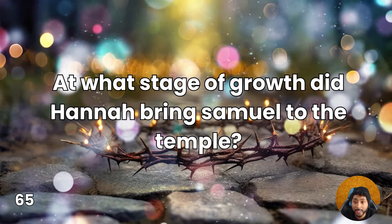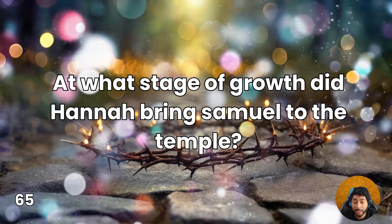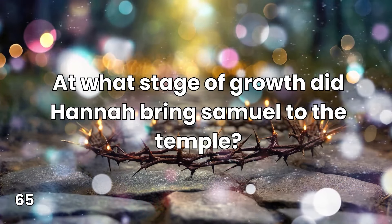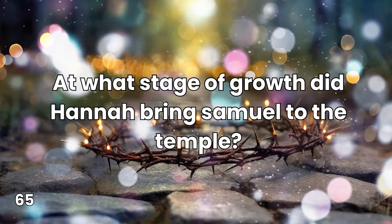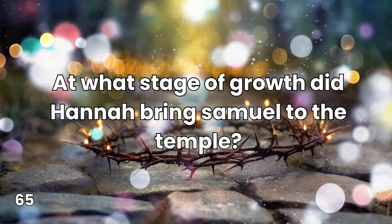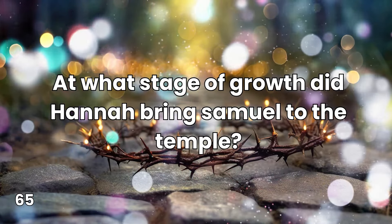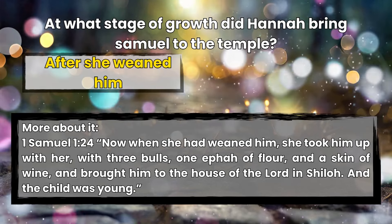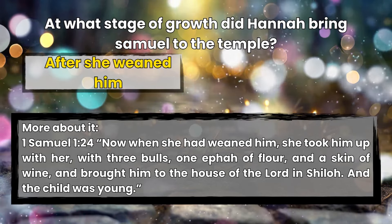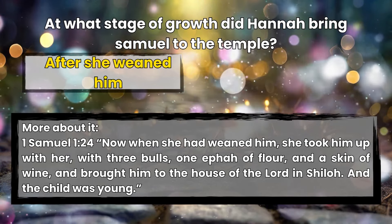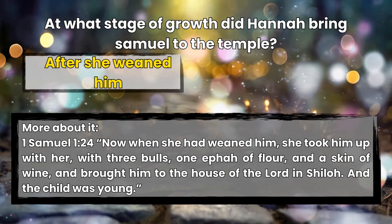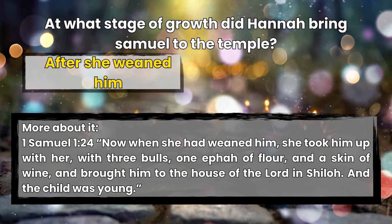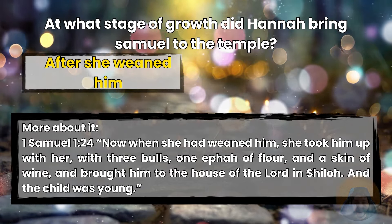Question 65: At what stage of growth did Hannah bring Samuel to the temple? After she weaned him. 1 Samuel 1:24 — Now when she had weaned him, she took him up with her, with three bulls, one ephah of flour, and a skin of wine, and brought him to the house of the Lord in Shiloh, and the child was young.